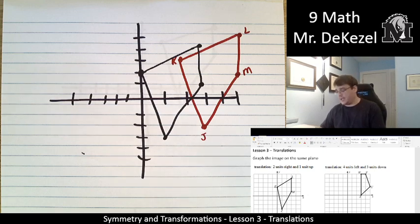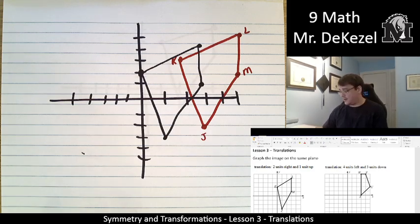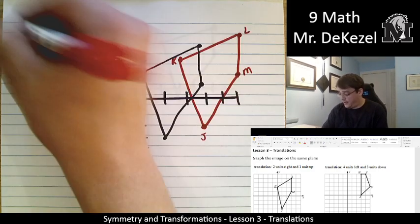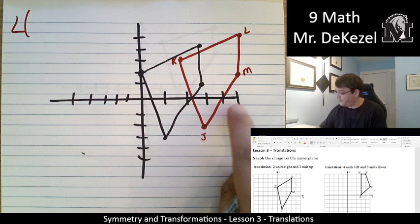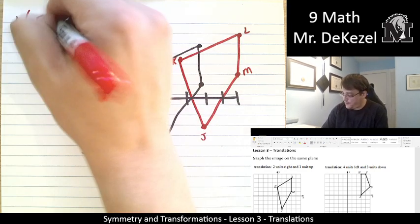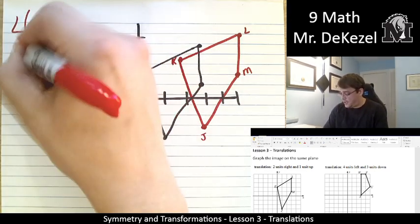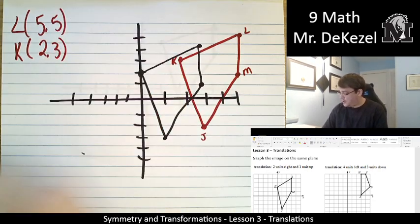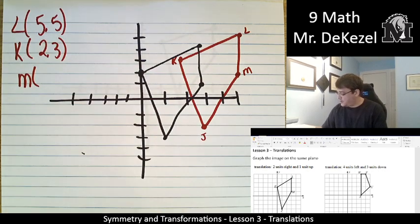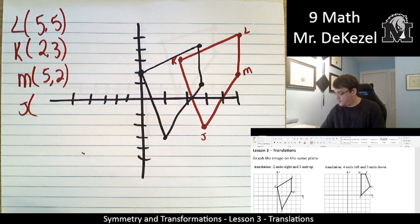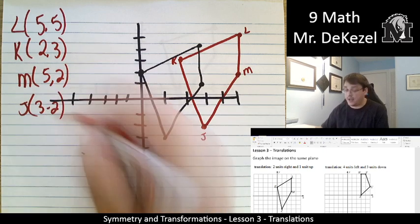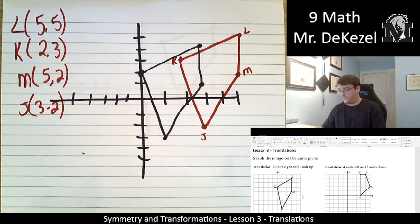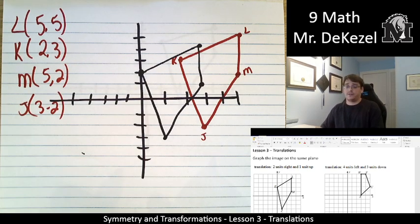Sometimes you may be asked to write the points. You can go ahead and do that. Like L, point L would be five to the right and five up. K would be two to the right and three up. M is five to the right and two up. And point J is three to the right and two down. That's a minus two. So we can go ahead and do that as well. We're just translating for now, just moving it around.